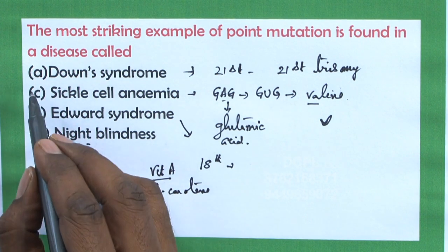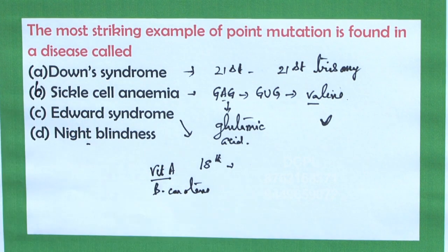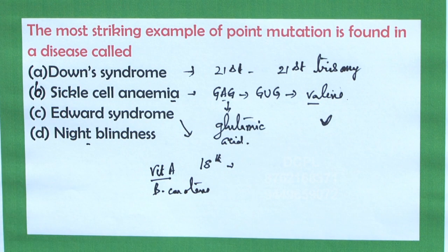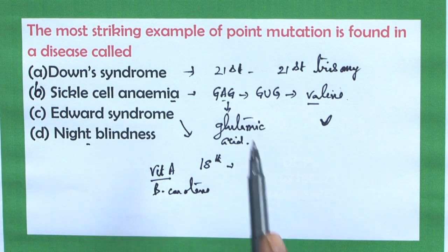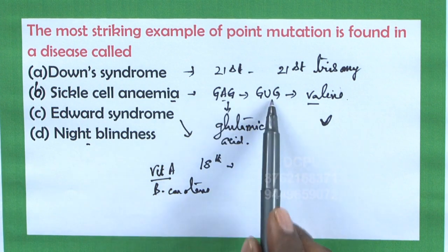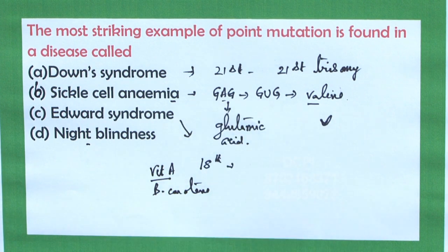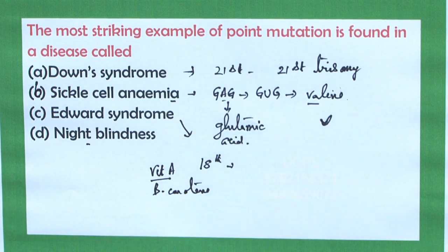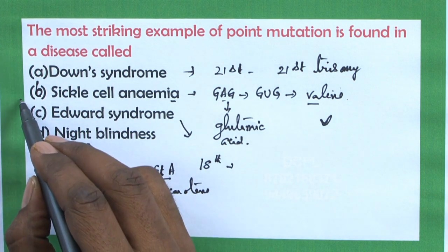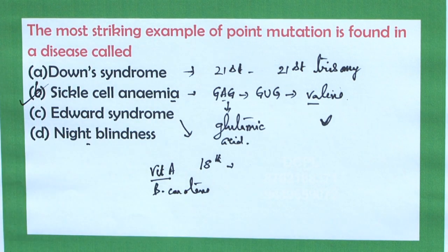When you look at all the options, option B is sickle cell anemia. Sickle cell anemia occurs because of a point mutation from GAG to GUG, replacing glutamic acid with valine. Hence, the correct option is option B, sickle cell anemia.